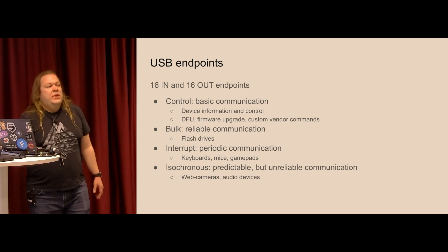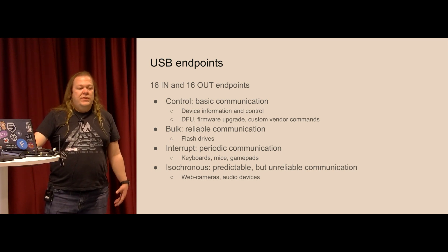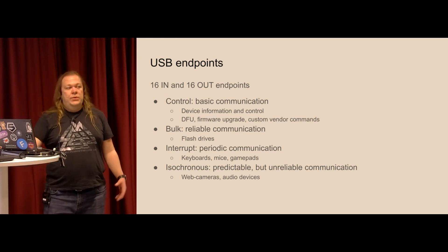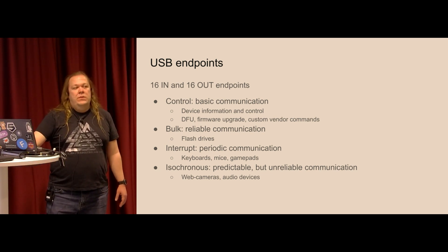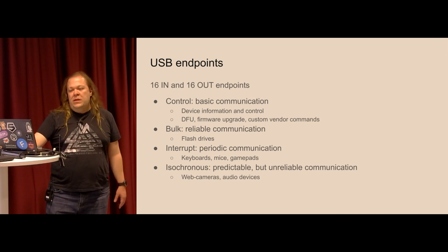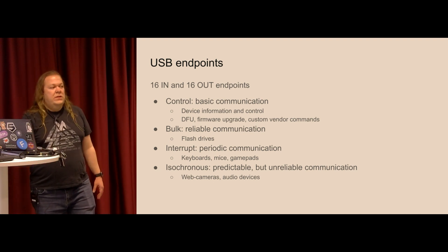When we develop USB devices we are mainly interested in the lowest layer, because if it works then you can do everything. USB communication is done via USB endpoints and each device may have up to 16 endpoints in each direction. If you need something bidirectional you need two different endpoints. The most basic endpoint type is the control endpoint, used for device information, getting descriptors, and control functions like reset.